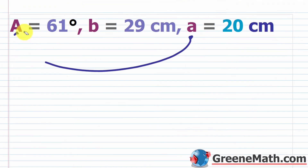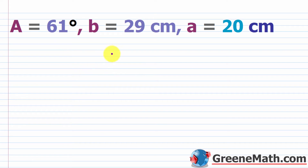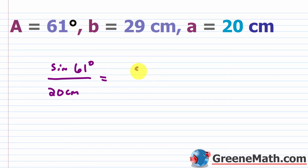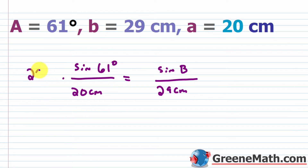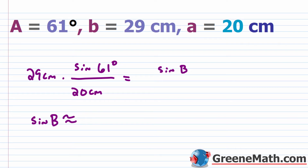Alternatively, using the law of sines: sine of 61 degrees over 20 cm equals sine of B over 29 cm. Multiply both sides by 29 and you get the sine of B is approximately 1.3 — which is greater than one, so that's impossible. Either way, the conclusion is: no such triangle.